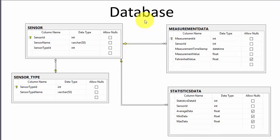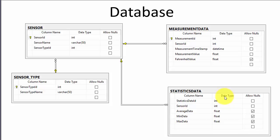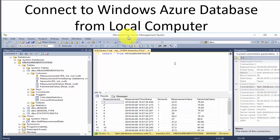Here you see the database we will use in this example. We will have a table with sensor types, a table with the different sensors — in our example just one temperature sensor — a table storing the measurement data, and a separate table storing statistics information. The analysis and creation of this data will be done in the cloud, and our monitoring application can then access this analysis data. Within our local SQL Server Management Studio we can easily connect to the cloud database the same way we connect to local databases, and create tables, stored procedures, and triggers.